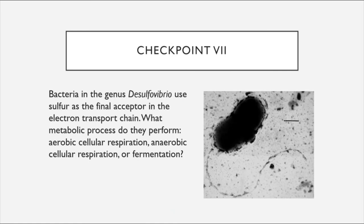Lastly, we'll leave off with a final checkpoint where we can see a bacterium from the genus Desulfovibrio. Bacteria in this genus use sulfur as their final electron acceptor in the electron transport chain. So I want you to tell me: what metabolic process do they perform—aerobic cellular respiration, anaerobic cellular respiration, or fermentation? And after this checkpoint, you are finished with Chapter 8.